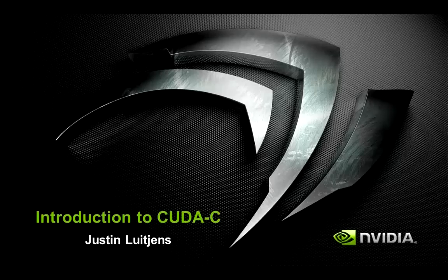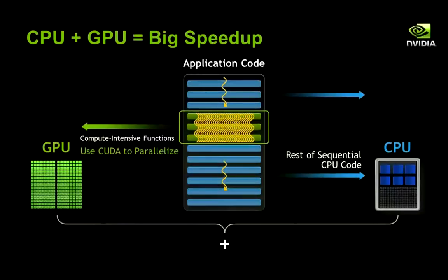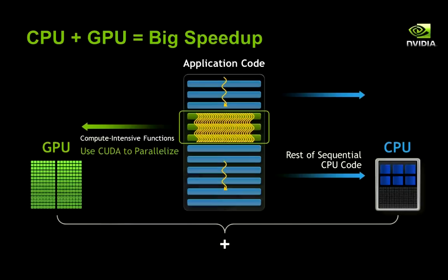Hello, I'm Justin Luchens, a developer technology here at NVIDIA. I'd like to start by describing what exactly CUDA is. CUDA is a development platform for accelerating applications on NVIDIA GPUs. The idea behind CUDA is that for many applications the majority of time is spent executing large repetitive loops, which tend to take up large amounts of the execution time. Using CUDA we can express the parallelism in these loops and accelerate them on the GPU, where we have a lot more computing power than on the CPU.